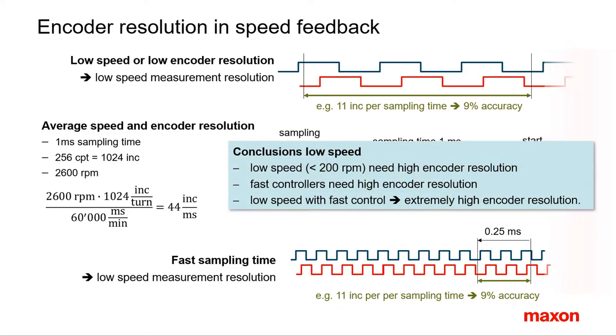All this leads us to the following conclusions. The lower the control speed or the faster the controller, the higher the required encoder resolution must be. Controlling low speed with a fast controller needs very high encoder resolution that can easily reach several thousand counts per turn.